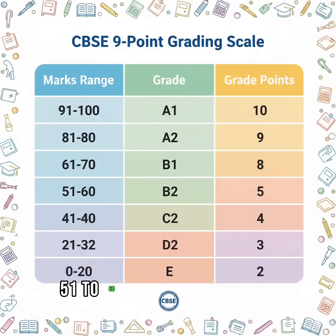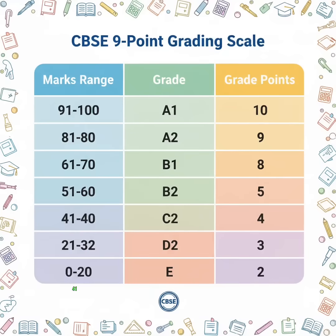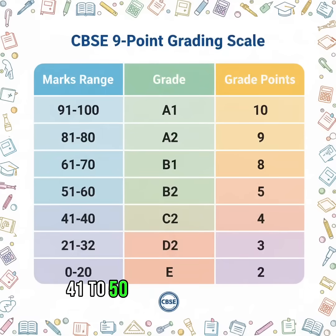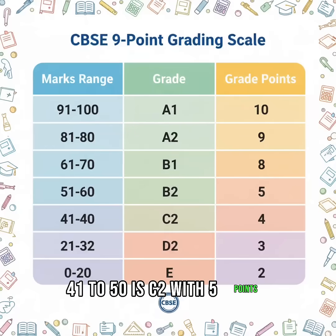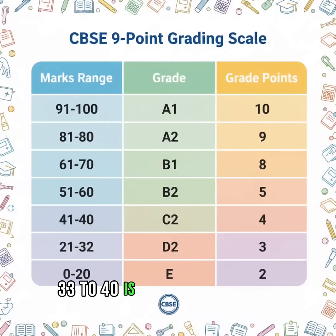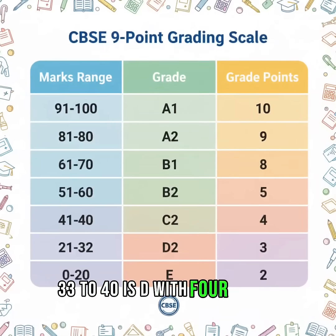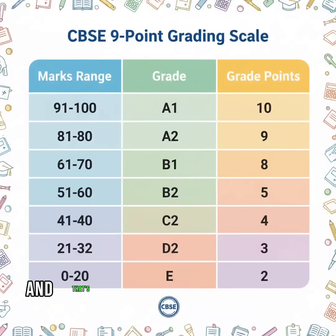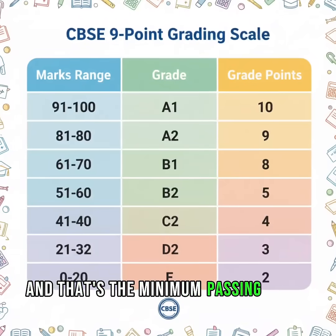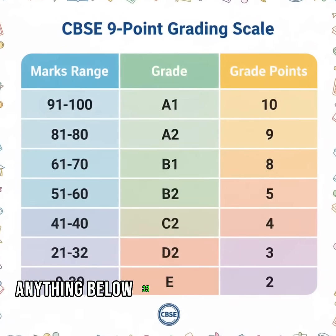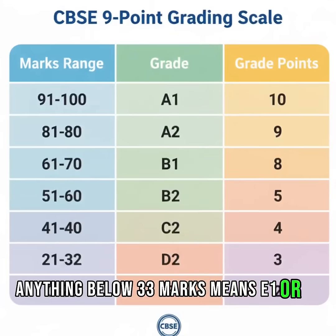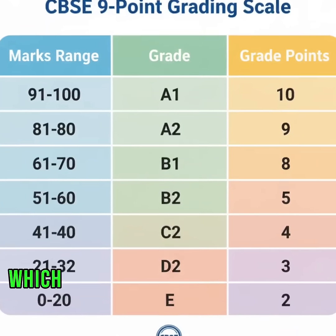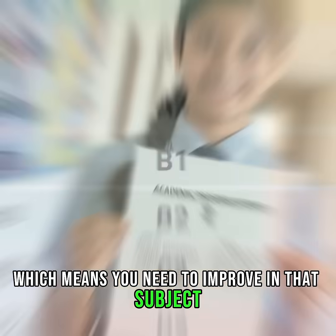51 to 60 is C1 with 6 points. 41 to 50 is C2 with 5 points. 33 to 40 is D with 4 points, and that's the minimum passing grade. Anything below 33 marks means E1 or E2, which means you need to improve in that subject.